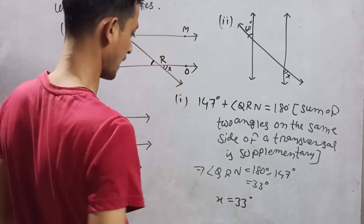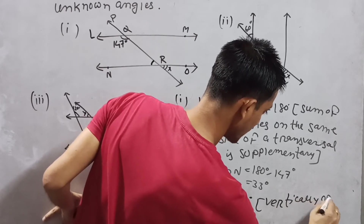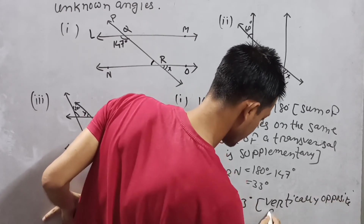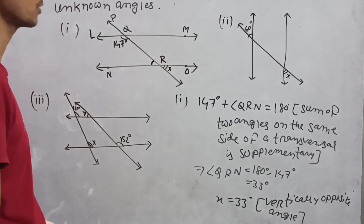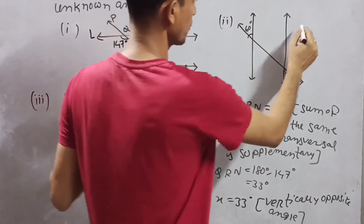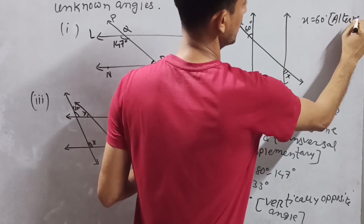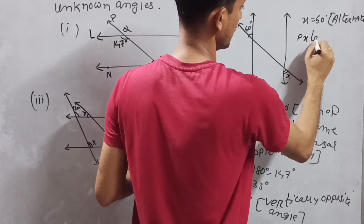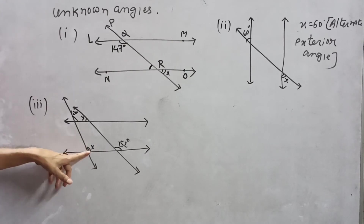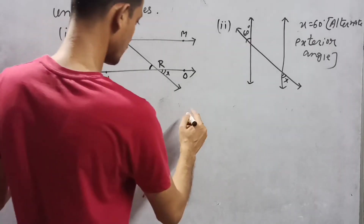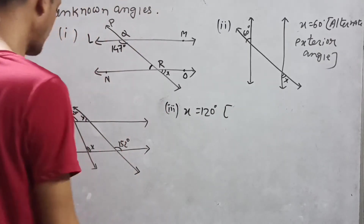X equals 33 degrees by vertically opposite angles. Number 2: this is X equal to 60 degrees — Y is the alternate exterior angle. You can see this figure shows corresponding angles, so X equals 120 degrees. Number 3: X equals 120 degrees as a corresponding angle.